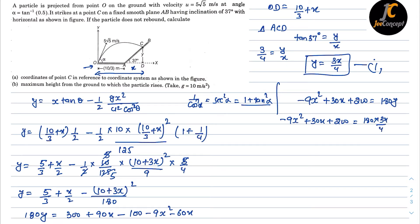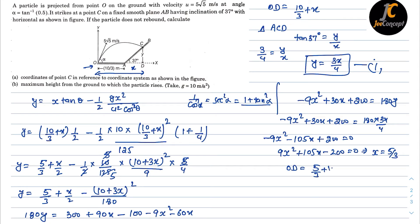After substitution, the equation becomes 9x² − 105x + 200 = 0. Solving this quadratic equation, the only positive value is x = 5/3. Therefore the total distance OD = 5/3 + 10/3 = 15/3 = 5 meters.